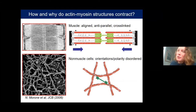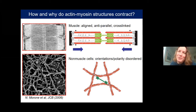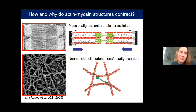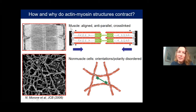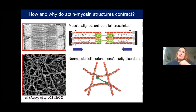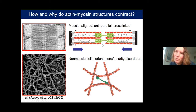A basic question is how these structures contract. In muscle, sarcomeres have a very regular structure: actin filaments anchored at the two ends with their plus ends outward, and bipolar myosin filaments between them. The myosin heads move toward the plus ends of anti-parallel actin filaments, generating contraction. But this mechanism does not translate literally to non-muscle cells, where we have, for instance, the cortex — a disordered network with actin filaments that are not aligned by polarity. So why does a disordered network contract?